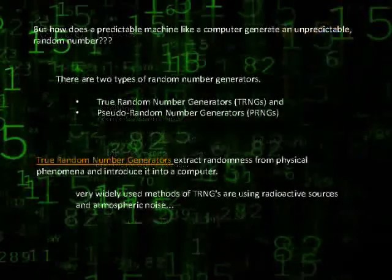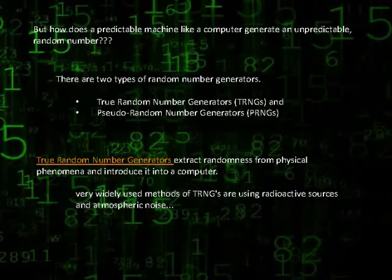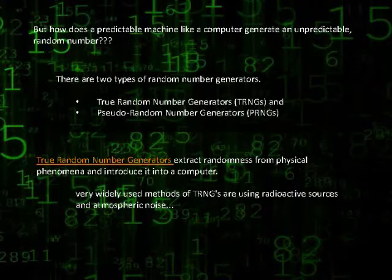But again, how does a predictable machine like a computer generate an unpredictable random number? Computers use random number generators or RNGs to output random numbers.